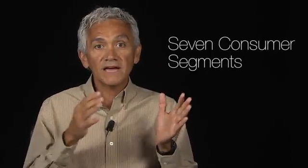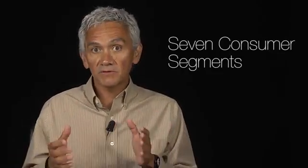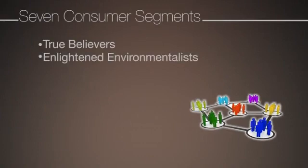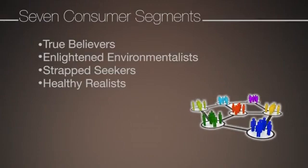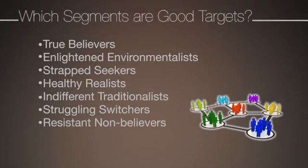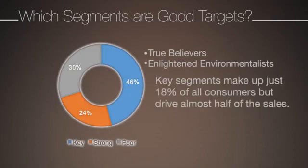The cluster analysis identified seven consumer segments based on lifestyle, history of purchasing organic and natural products, attitudes towards these products, and demographics. These segments were labeled as true believers, enlightened environmentalists, strapped seekers, healthy realists, indifferent traditionalists, struggling switchers, and resistant non-believers. Detecting the segments that are good targets for natural and organic markets was one of the main outcomes of the analysis. True believers and enlightened environmentalists were identified as the key segments, representing 18% of the population but together driving nearly half of the total sales.